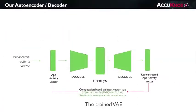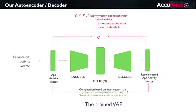At regular runtime intervals, new app activity is fed to the encoder, which is a convolutional neural network. The CNN reduces the input to a smaller vector that we'll call an interval model, or M. The decoder takes M as its input, and using its own CNN, it tries to rebuild the original activity vector that was input to the encoder. We then compare the original activity vector — the input to the encoder — against the decoder's reconstructed activity vector, producing an error metric.